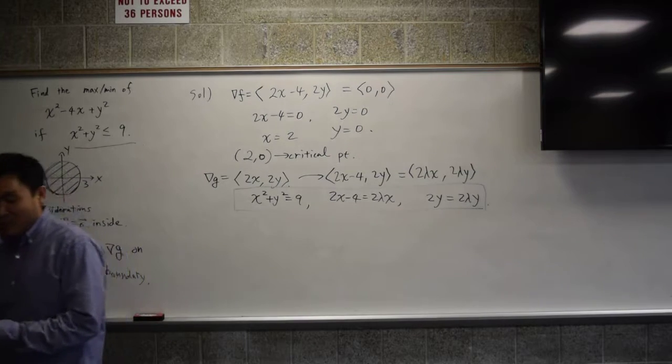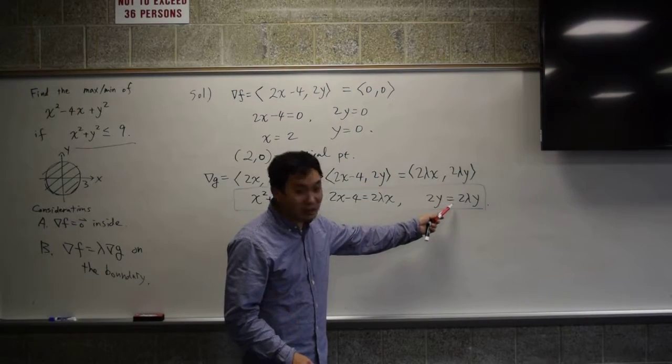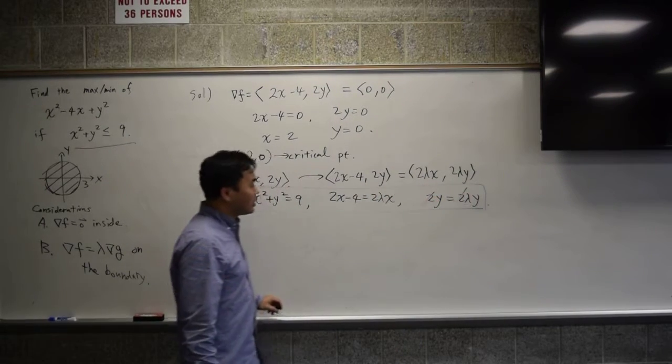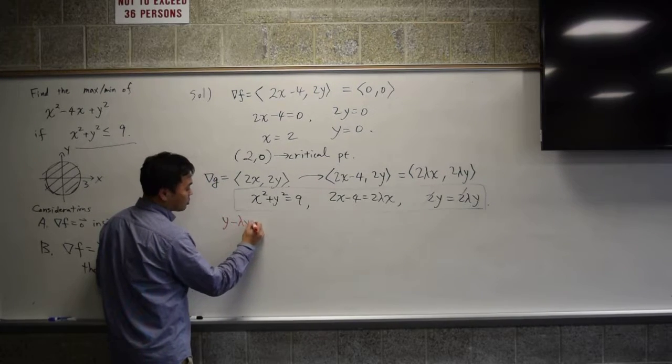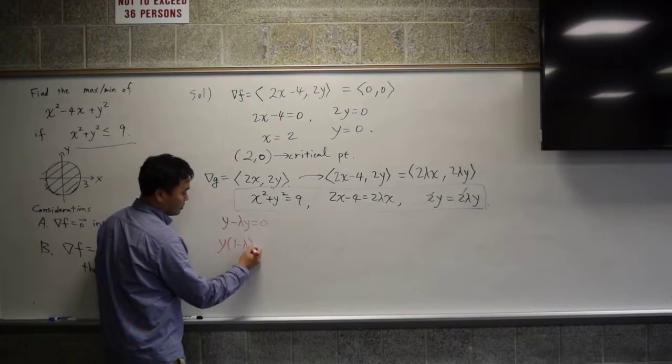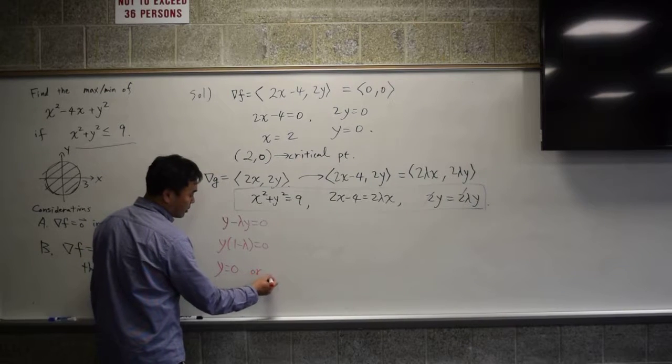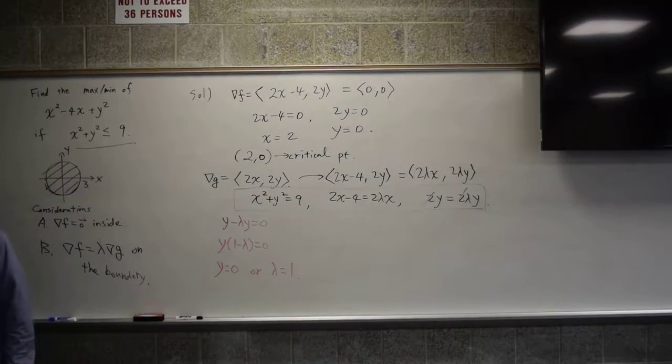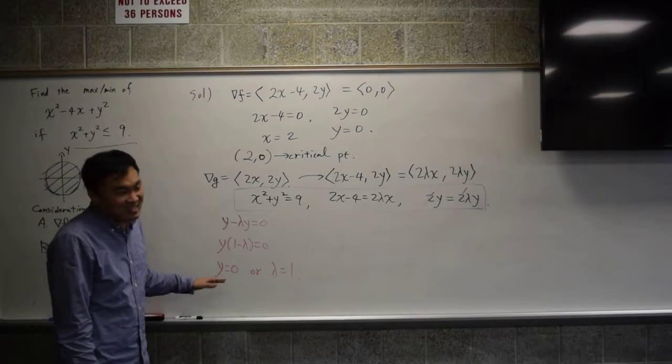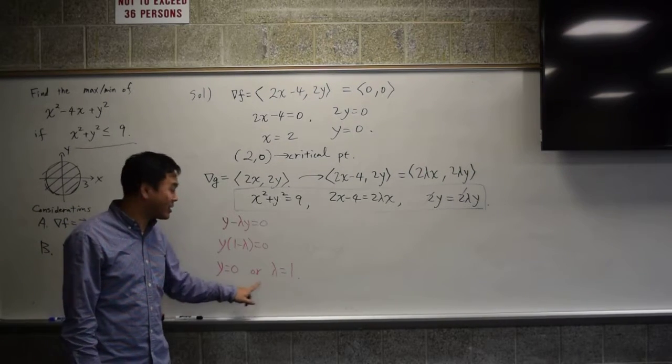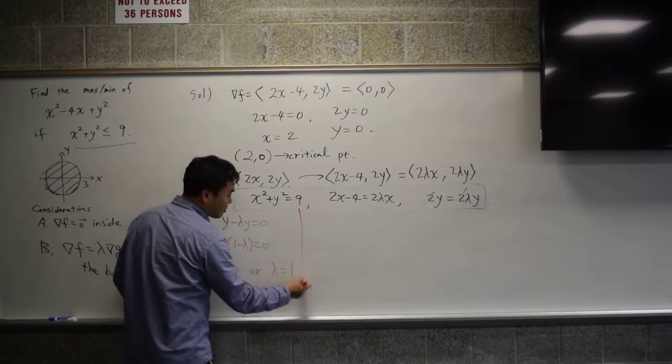In principle, you can solve it. Unfortunately, it doesn't look like an easy equation to solve, but let's try it. Among these, the easiest one is this one. So let's divide by 2, and move this over to the other side. So you have y minus lambda y equal to 0, which can be factored by y. So you actually have two cases. Either when y is 0 or lambda is 1. In a lot of cases, these questions have algebra that's quite hard. You have to track case by case. So let's track both cases separately.